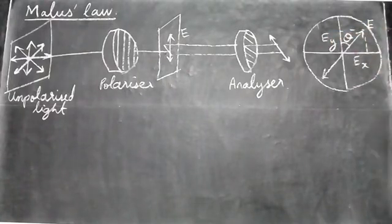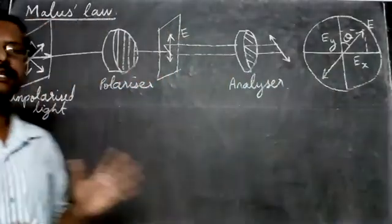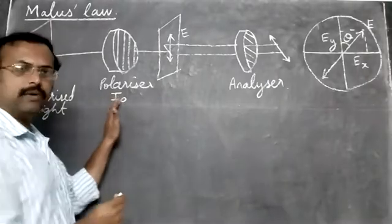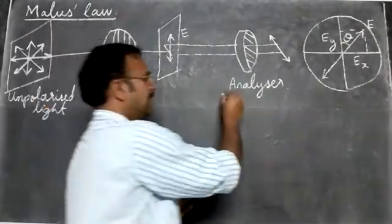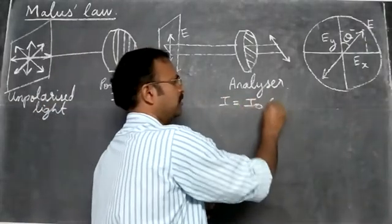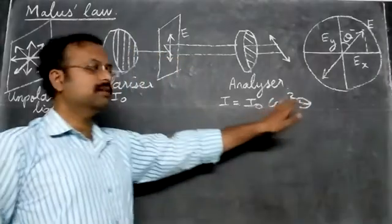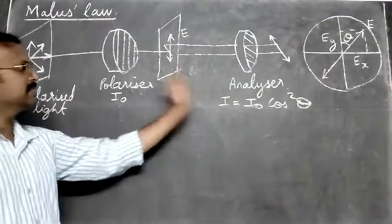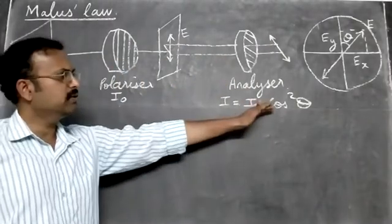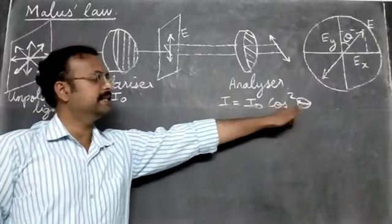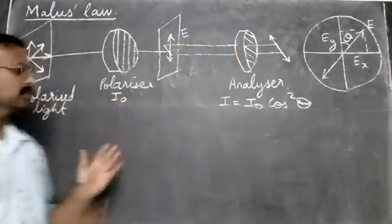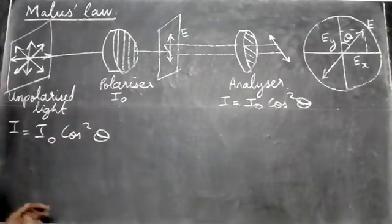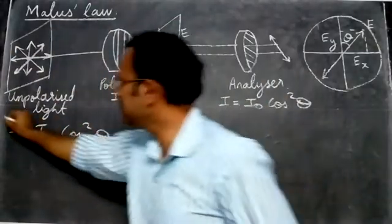Let the intensity of light coming from the polarizer be I₀. The intensity of light coming out from the analyzer, that is I, is equal to I₀ cos²θ. This is called Malus's Law. It states that the light coming from the analyzer equals I₀ times cos squared of the angle of the analyzer.